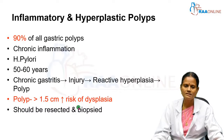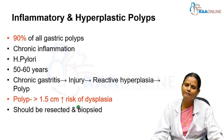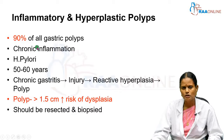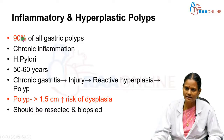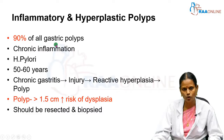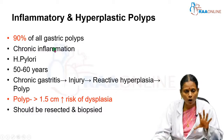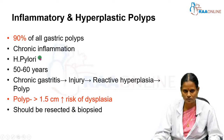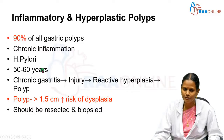Now we shall see about inflammatory and hyperplastic polyps. They constitute 90% of all the gastric polyps. They are due to chronic inflammation, of which H. pylori plays a very important role, and are common in the elderly age group of 50 to 60 years.